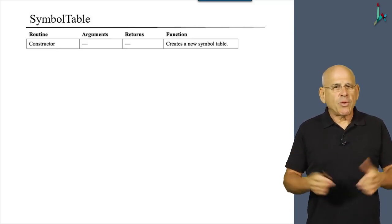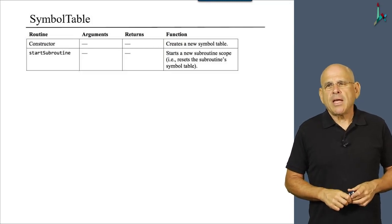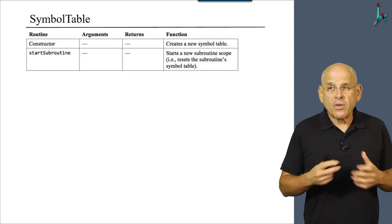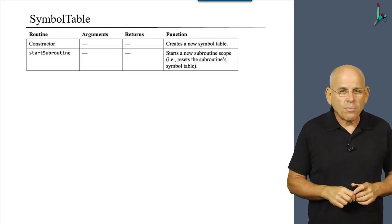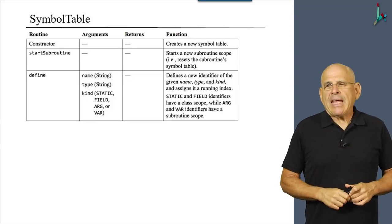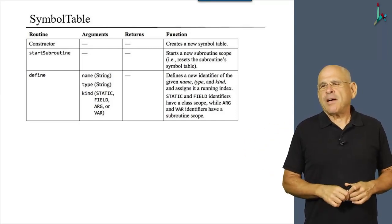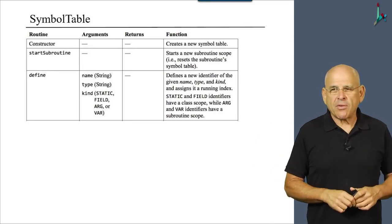So first of all, this class will have a constructor that creates a new symbol table. It will have a start subroutine routine that simply starts a new subroutine scope. Following the tips that I gave you before.